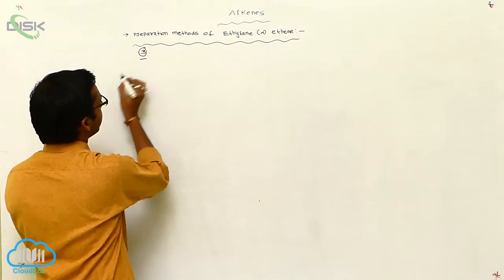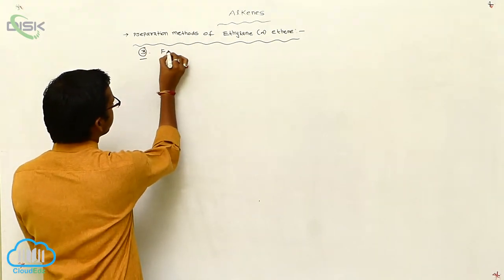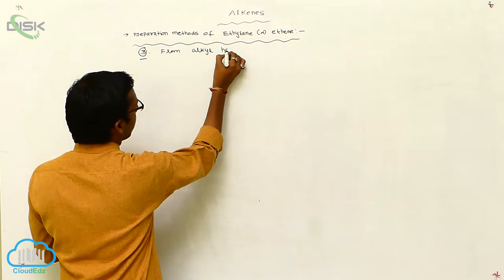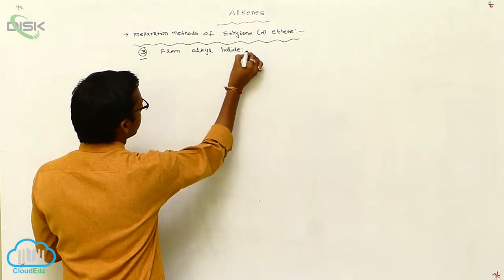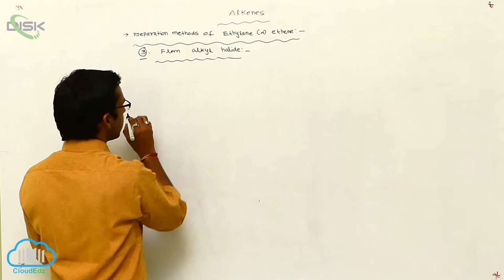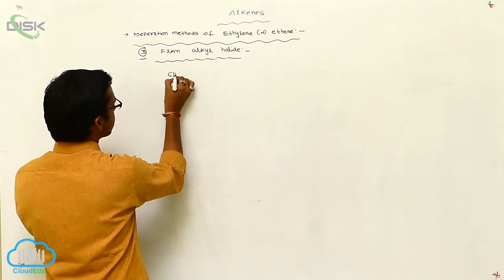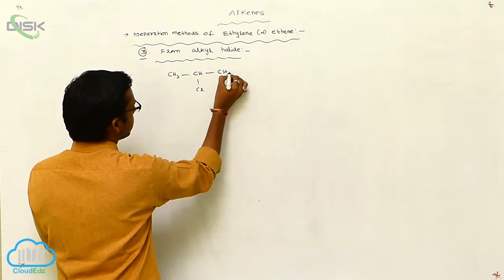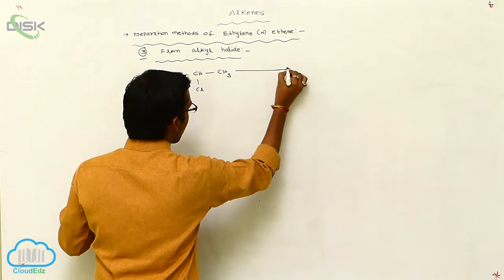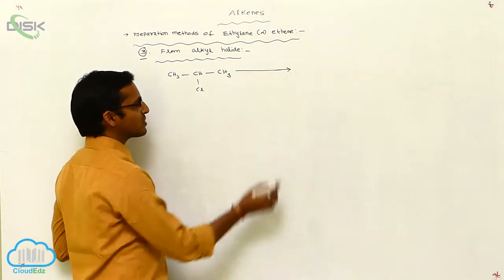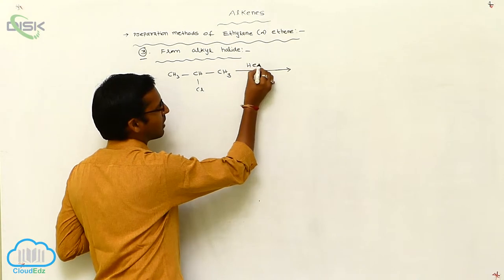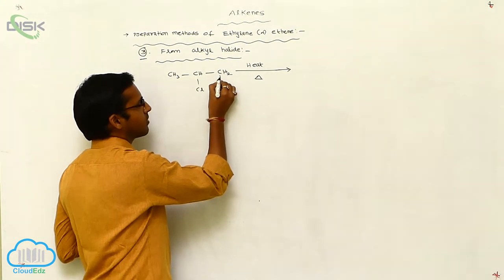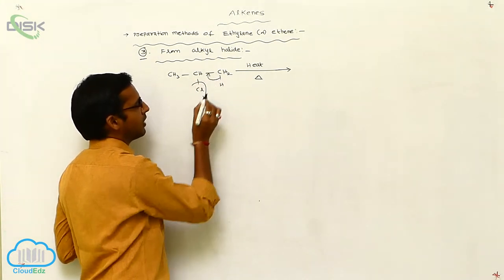The preparation of alkene is from alkyl halide. This example is a simple one: CH3, CH, Cl, CH3. This is an elimination reaction in the presence of thermal conditions. You can think of it like this — this sigma bond is shifted, and this is completely eliminated.